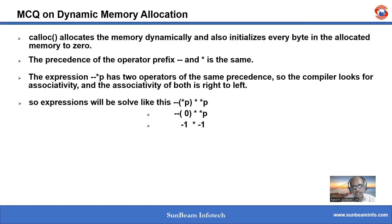So -1 multiplied by -1 will be 1. So the final answer will be 1. The correct answer of the MCQ will be option A.